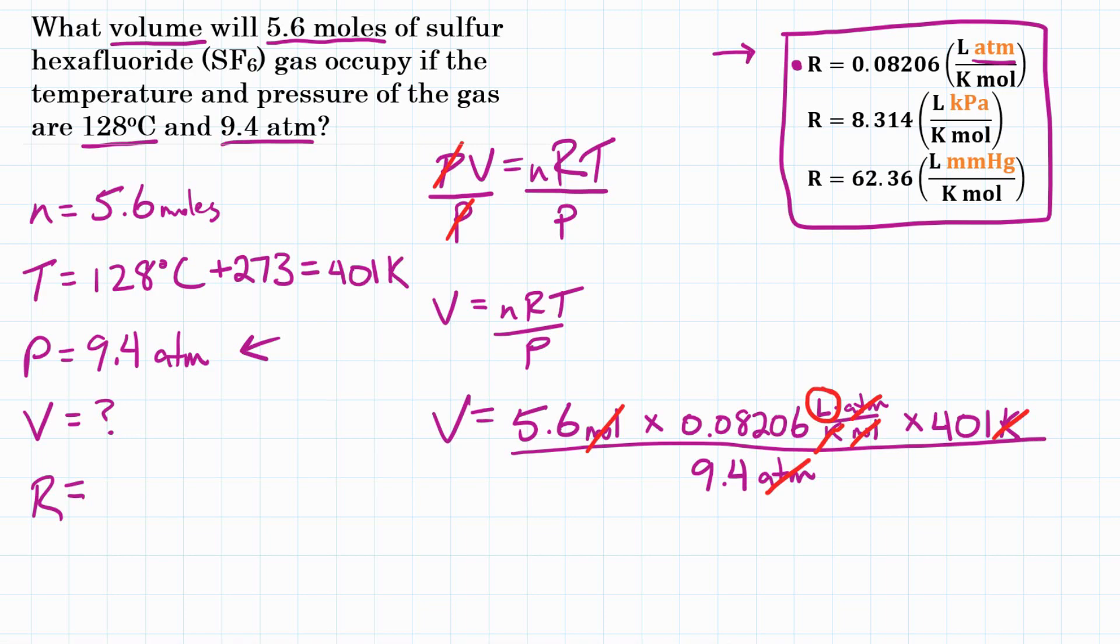Okay, let's plug this in our calculator and do the math. We are going to do 5.6 times 0.08206 times 401 divided by 9.4 equals, and in the end, for volume we should end up with around 19.61, which we will round to 20 liters. All right, so final answer for this problem. Our volume is 20 liters.